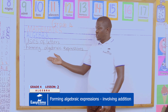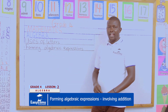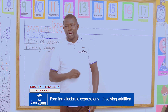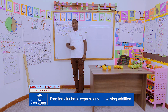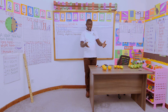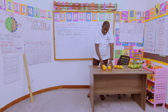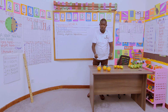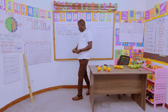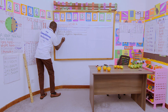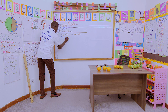Today we will be forming algebraic expressions. How can you simplify an algebraic expression? For more on this, join me. In our pairs, just observe — I have some oranges here.